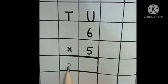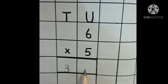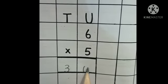Ab hum write karenge 30. 3 T ke neeche, 0 U ke neeche. I hope you understood.